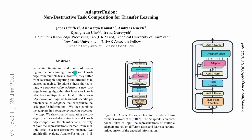Pfeiffer proposed AdapterFusion, a new two-stage learning algorithm that leverages knowledge from multiple tasks. You perform adapter tuning of your transformer for one particular task and extract one adapter. A second task with a second dataset gives a second adapter. With 10 tasks and 10 datasets you extract 10 adapters. Then with AdapterFusion, published in January 2021, you could circumvent catastrophic forgetting — you can plug adapters in like modules, do an AdapterFusion, and the model is trained on 3, 10, or 20 specific tasks.